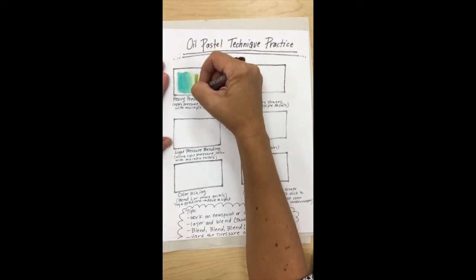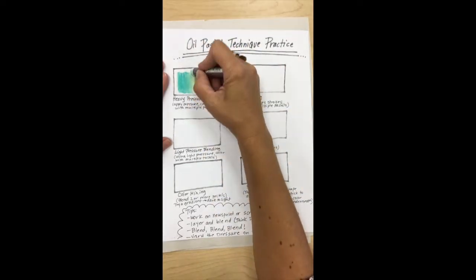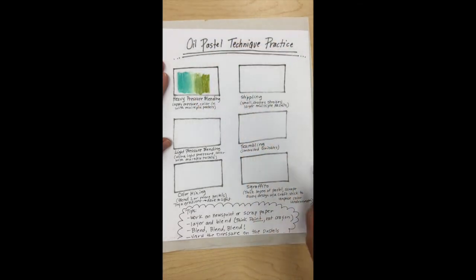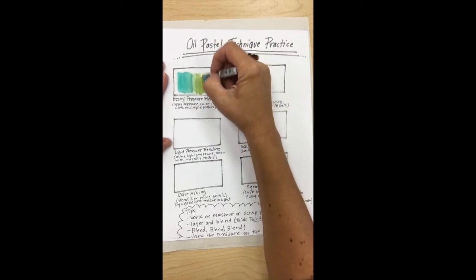One thing about pastels that you need to know is that they are more like paint and less like crayons, even though they look like a crayon. They're really more like paint and I want you to think about them like paint. They're meant to be blended, they're meant to be mixed. So heavy pressure mixing or blending, you can see that right here, you can mix different colors together.